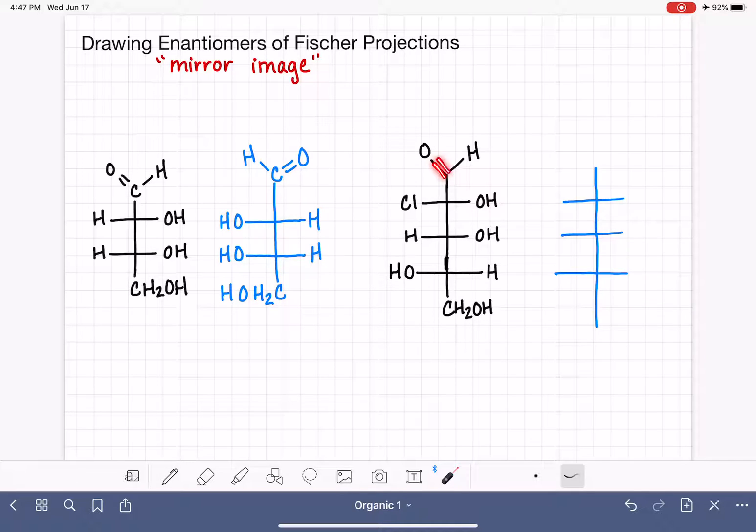So for example, for this particular portion of the molecule right here, it's not necessary for us to reflect that portion of the molecule and draw its mirror image. If we want, we can match it perfectly. Now you might be saying to yourself, that does not make any sense.